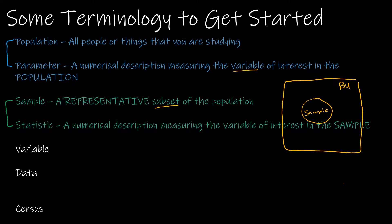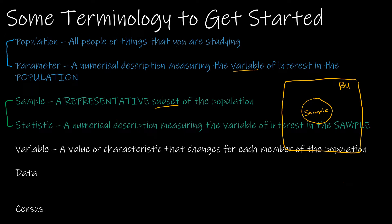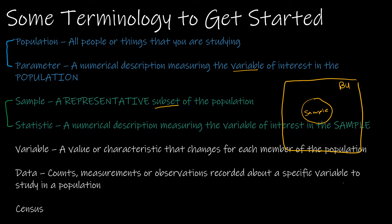Whatever it is that we are studying is called a variable — a value or characteristic that changes for each member of the population. If we were talking about GPA, the variable would be GPA and each student would obviously have their own GPA. Data is the actual values: the counts, measurements, and observations that we are recording about that variable — in that example, all of the GPAs we are looking at.